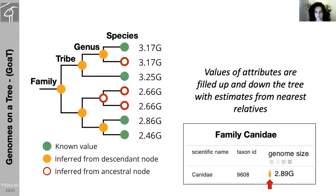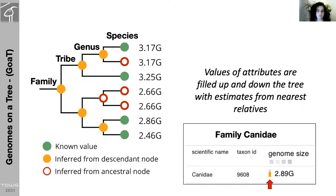This is how GOAT works. Based on direct measurements in green, the values of attributes are filled up and down the tree. A value measured for a species can be estimated for the genus, which is then used to estimate missing values for other species lacking that attribute. These values are estimated using metrics appropriate for each attribute. For many projects, estimating genome size of target species is crucial to plan the use of laboratory resources and prevent under-sequencing or over-sequencing of samples.